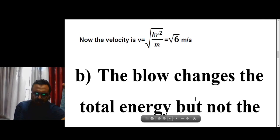The second part: a radial blow changes the total energy of the system but not the angular momentum. The effective potential depends on the angular momentum, which does not change. Only the energy changes because the kinetic energy in the radial direction — m·r-dot — is changing due to the blow.